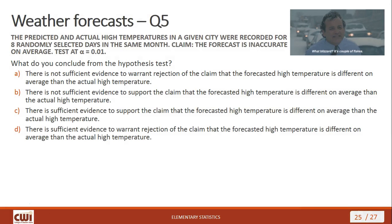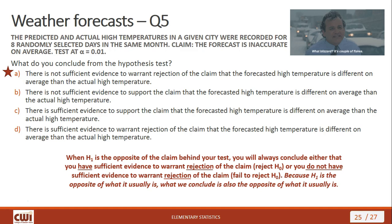What do we conclude? We fail to reject H-naught, so there is not sufficient evidence. Since we did not have a match between our alternative hypothesis and our claim, we select 'warrant rejection of the claim' — answer option A. Remember, these two key questions — did we reject H-naught, and do we have a match — always lead you to the right conclusion.